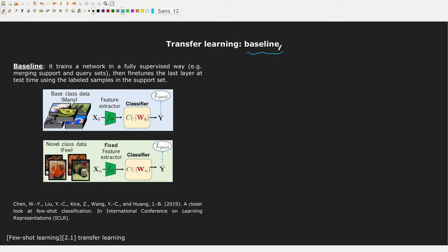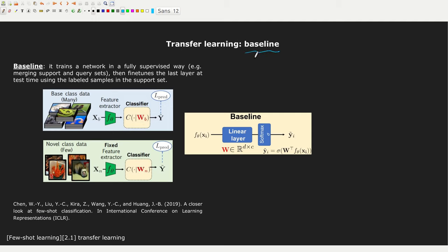The baseline approach described in this paper is an example of transfer learning — pretty intuitive. You have a feature extractor, your input, feature extractor, and then a classifier as output. At test time you keep the parameters inside the feature extractor fixed and focus on the matrix W, fine-tuning it on the new data. Opening the classifier box, we see it's just a standard linear layer: a matrix W in R^(D × C), output Y, and a softmax function.